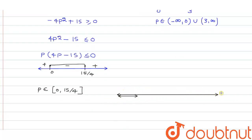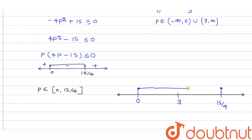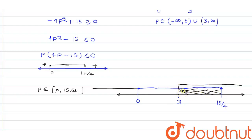Taking the intersection of all three cases on a number line with points 0, 3, and 15/4: the first case gives [0, 15/4], the second and third give (-∞,0)∪(3,∞). The intersection is p ∈ (3, 15/4] — where 3 is open and 15/4 is closed.